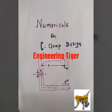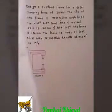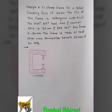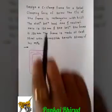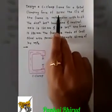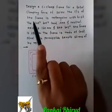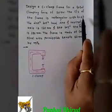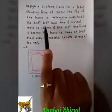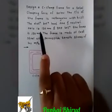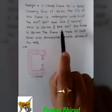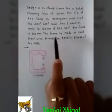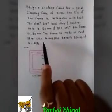Today we will take numericals on the C-clamp design. Let us take the first example: design a C-clamp frame for a total clamping force of 20 kilo Newton. The cross section of the frame is rectangular with the relation B equal to 2t. The distance between the load line and the neutral axis is 120 mm.